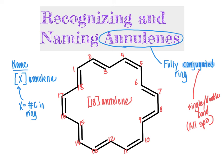Generally when we use the term annulene, we're referring to these rather large structures. With that, we conclude our discussion of naming different molecules that will come into play in our discussion of aromaticity in this chapter. In the next few videos, we'll look at how to recognize whether a molecule is aromatic or not — we've mentioned annulenes, benzene, and aromatic heterocycles. How do we know some of these molecules are aromatic? What are the criteria used to assign aromaticity, and what does it mean when we say something is aromatic? That's what we'll be tackling in the upcoming videos.